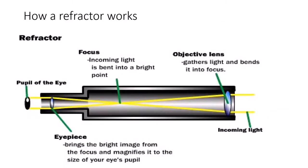At the front of the refractor is the objective, or main lens, which determines the aperture. The classic amateur instrument was a 60mm or 2.4-inch refractor. I have two refractors: a 90mm and a 120mm. The objective refracts the incoming light to the focal point, and then the eyepiece — essentially a magnifying glass — magnifies the image from the focal point.